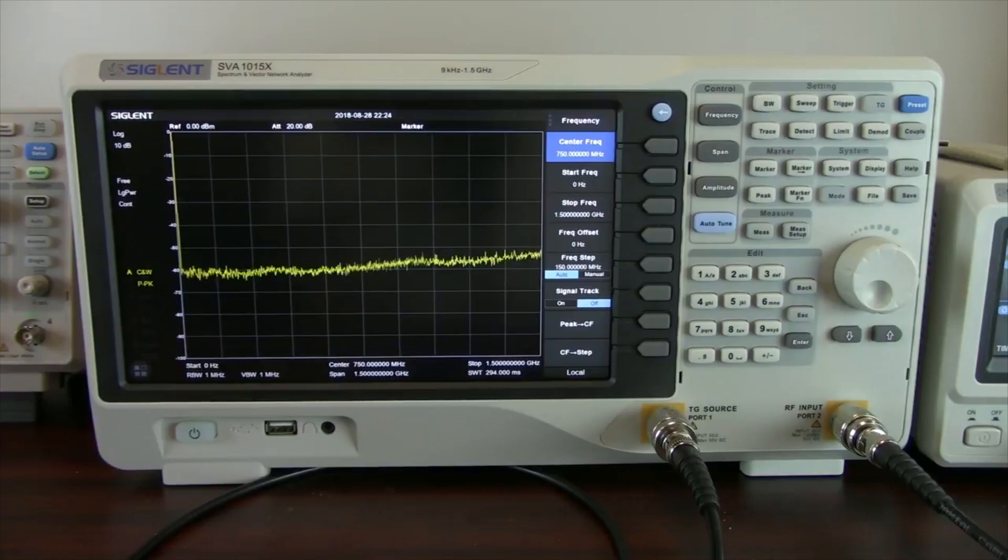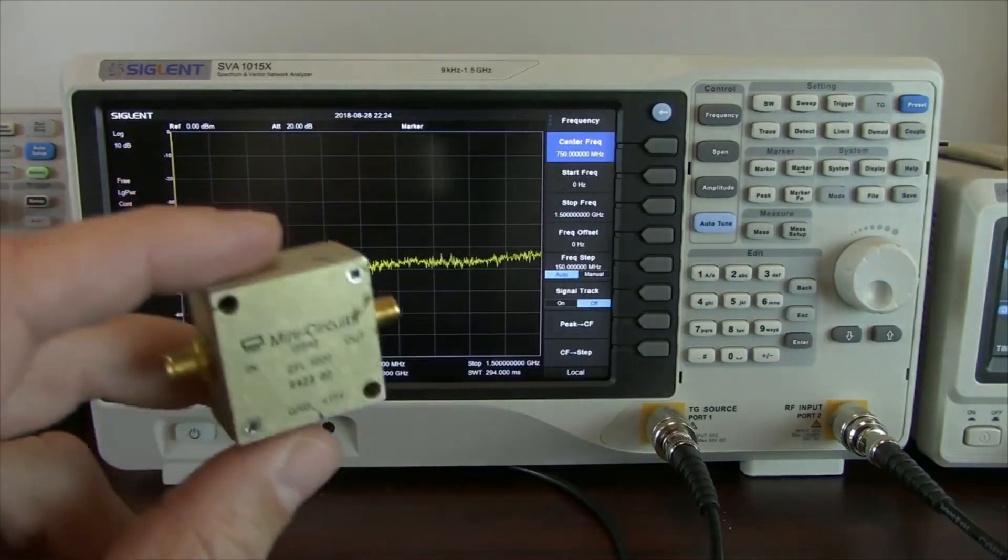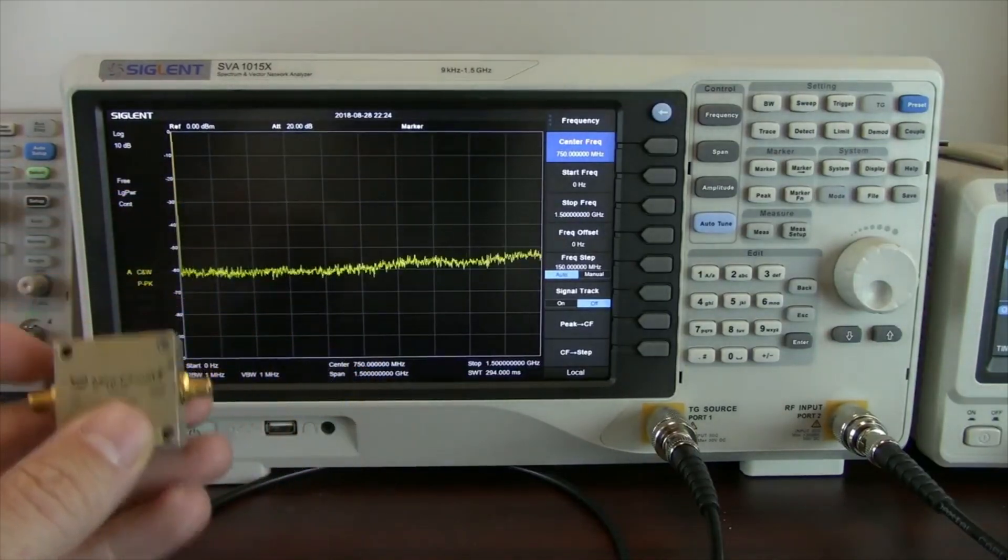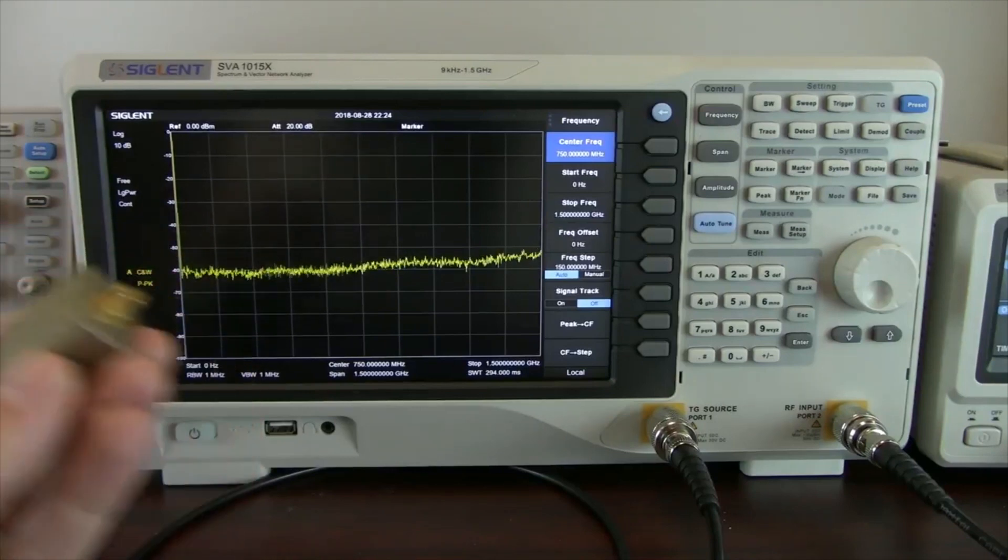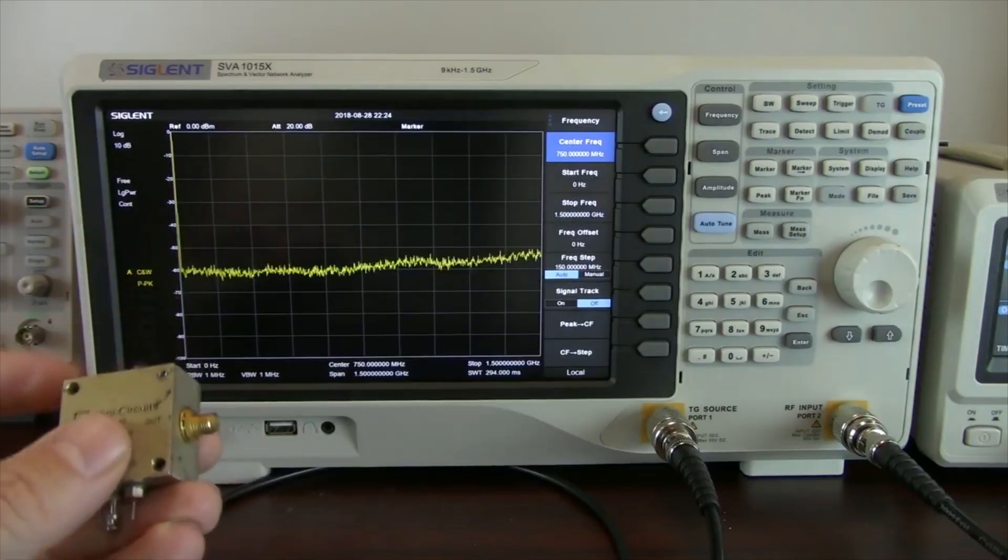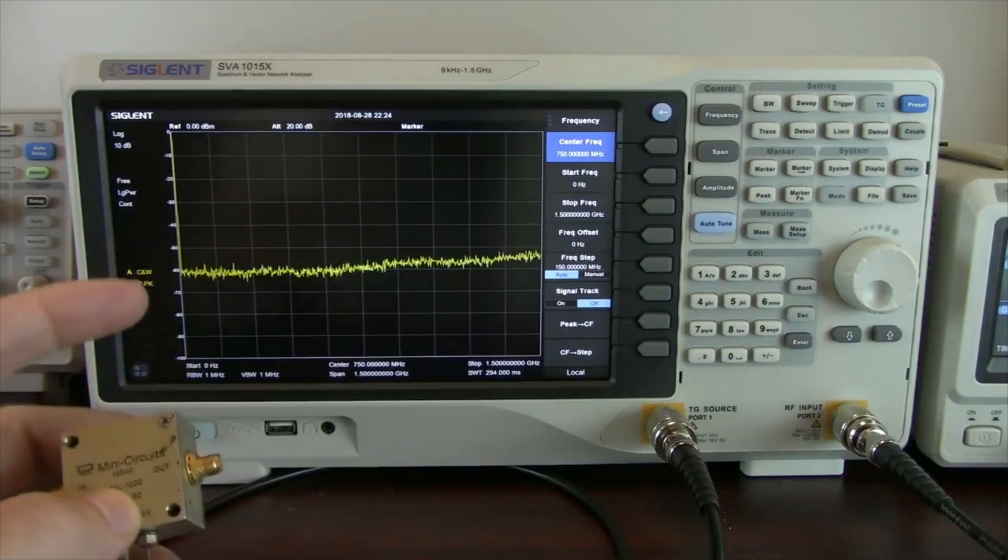In today's video, we're going to take a look at an amplifier, and we're actually going to test the gain of this amplifier, which is a measure or comparison of the input power versus the output power. An amplifier is meant to amplify a signal, so we want to put in a certain amount of power and then see a higher amount of power on the output.